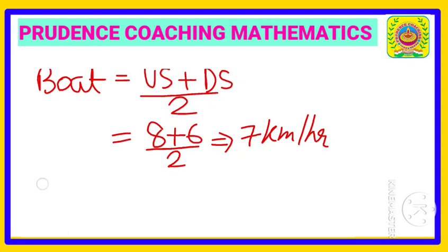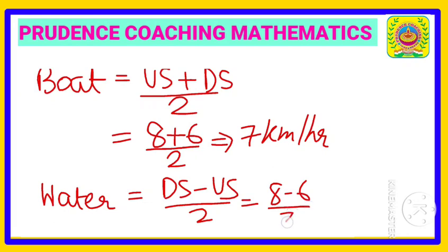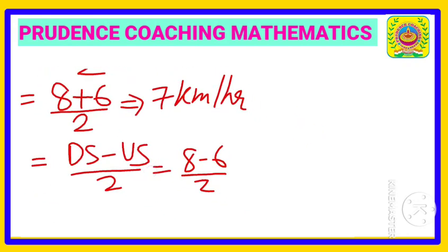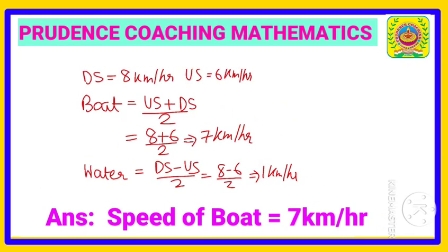If asked to find the speed of the stream, use (downstream − upstream) / 2 = (8 − 6) / 2 = 2 / 2 = 1 km per hour. So the final answer for the boat's speed in still water is 7 km/h, and the stream speed is 1 km/h.